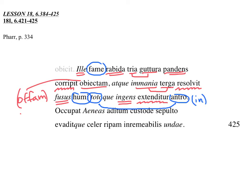Occupat Aeneas aditum, custode sepulto, evaditque celer ripam irremmeabilis undae. Aeneas seizes, occupies, you could say. The idea is you see something when it's unguarded. So now that the way is unguarded, Aeneas seizes the aditum, the entrance.